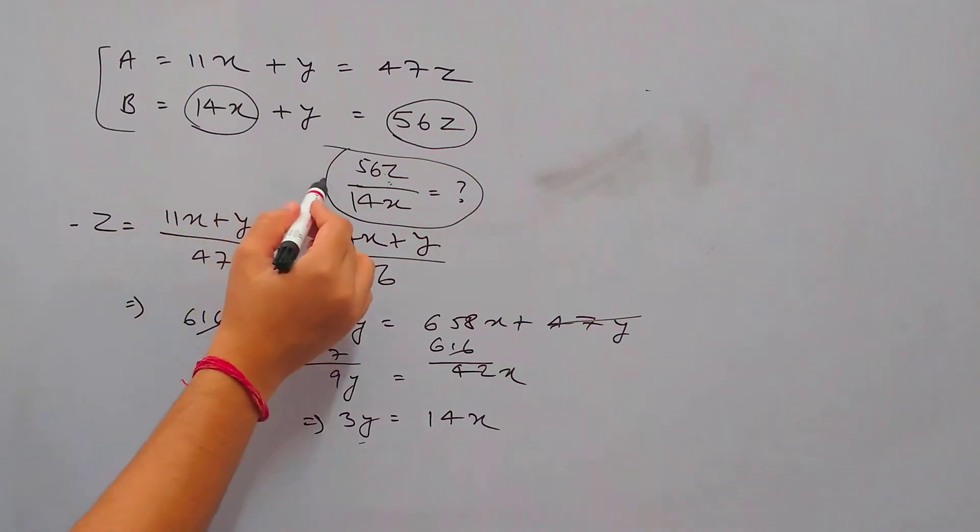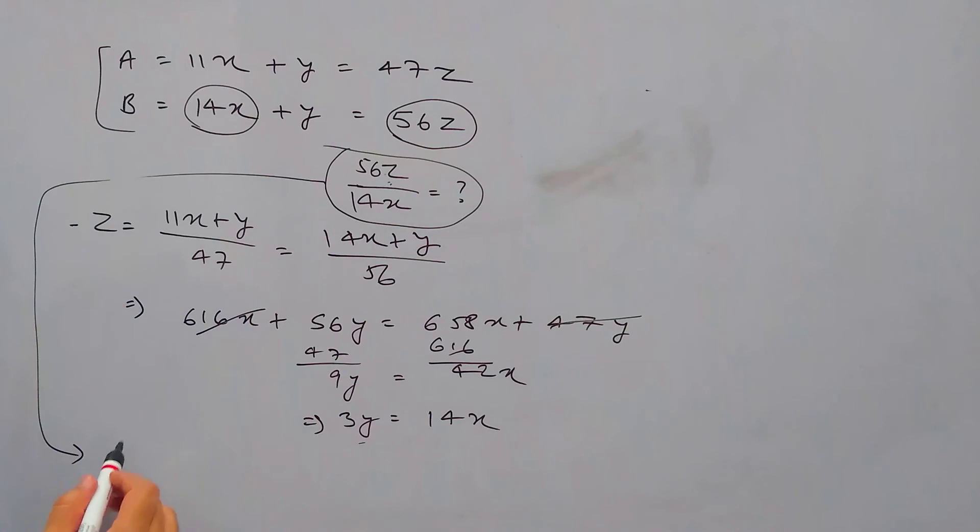If we take this 56 on the left hand side, we will get 56z equals to 14x plus y. And 14x is 3y, so instead of 14x plus y we can write 3y plus y which will be 4y, and 14x is again 3y. So this is 4 by 3 and the required ratio is 4 is to 3 in this question.